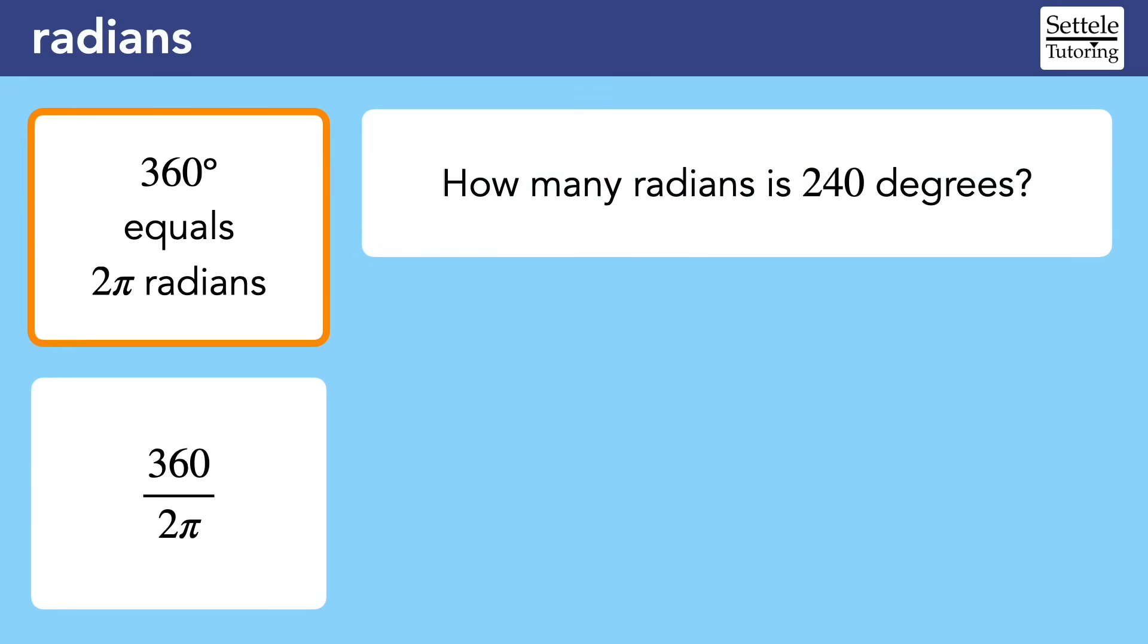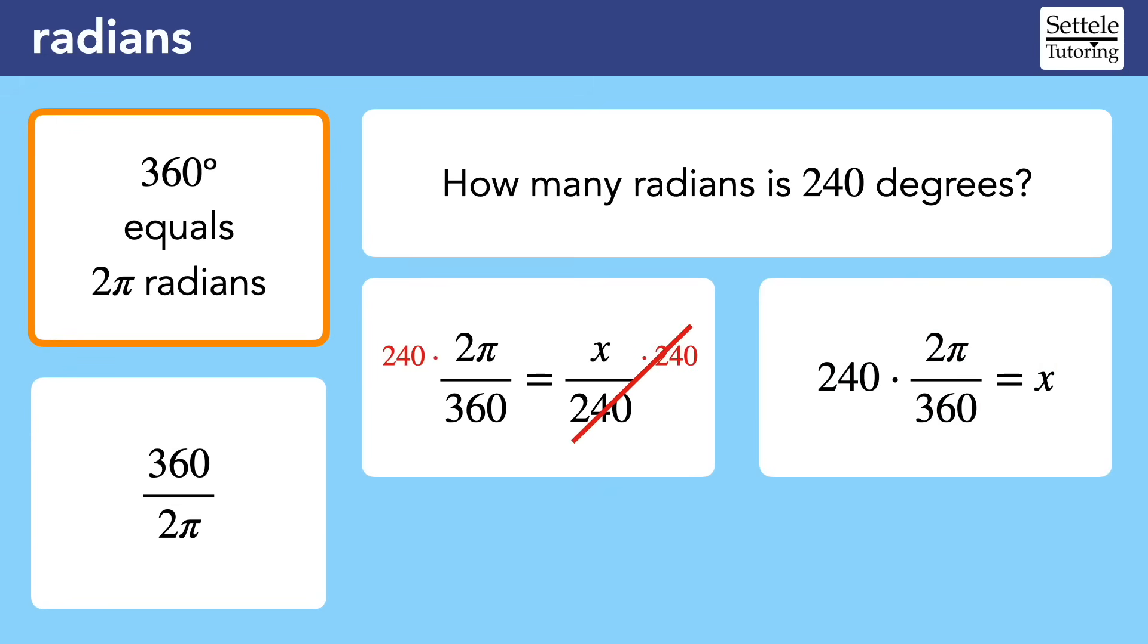This process will still work if they reverse the question. How many radians is 240 degrees? We can still set up our ratio using the reference sheet conversion, but I recommend flipping it upside down. I generally prefer to keep the x on the top of a fraction, and since our x is the number of radians, we also want radians on the top of the conversion. But it really doesn't matter what's on top, as long as you're consistent with both of the ratios. Isolate x by multiplying both sides by 240. Reduce the fraction to find that 240 degrees is equivalent to 4π over 3. Radian measures will almost always include π.